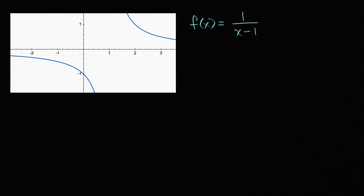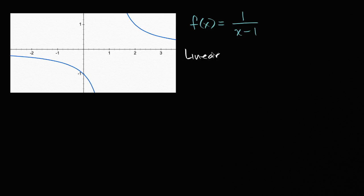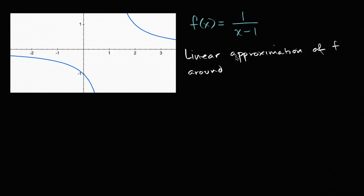What we're going to do is find an approximation. I want to find a linear approximation — so I'm going to approximate it with a line. I want to find a linear approximation of f around x equals negative one.